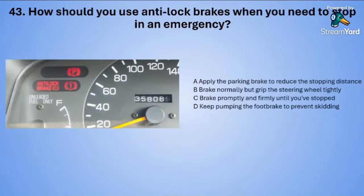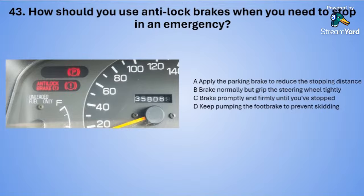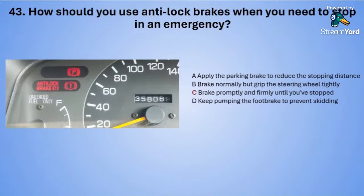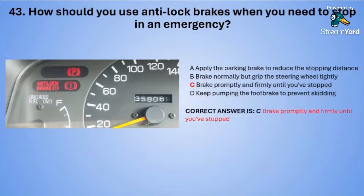Question forty-three: How should you use anti-lock brakes when you need to stop in an emergency? A: apply the parking brake to reduce the stopping distance. B: brake normally but grip the steering wheel tightly. C: brake promptly and firmly until you have stopped. Or D: keep pumping the foot brake to prevent skidding. The correct answer is C — brake promptly and firmly until you have stopped.